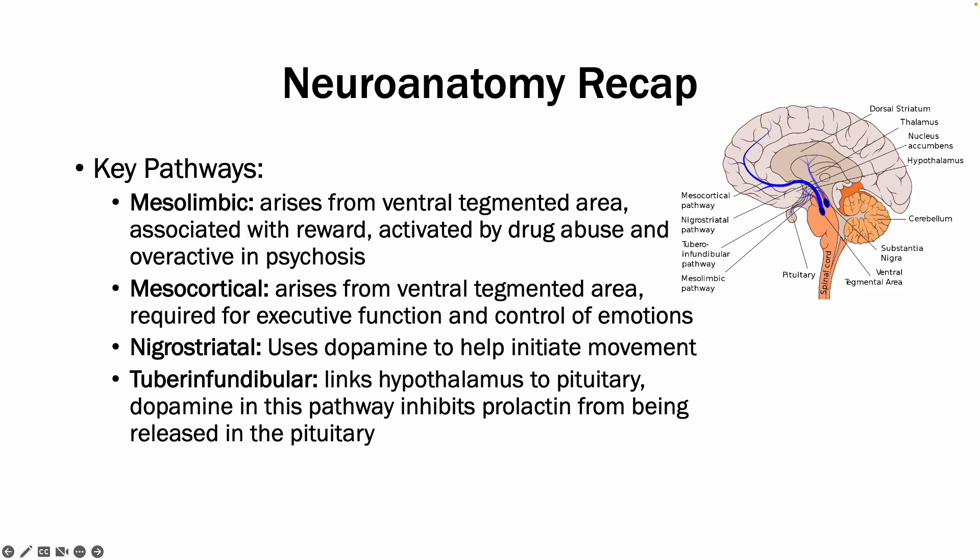The mesocortical pathway also arises from the ventral tegmental area, and it is required for executive function and control of emotions. The important aspect here is that if the dopamine receptors are blocked in this pathway, there is an increase in negative symptoms in patients with psychosis.